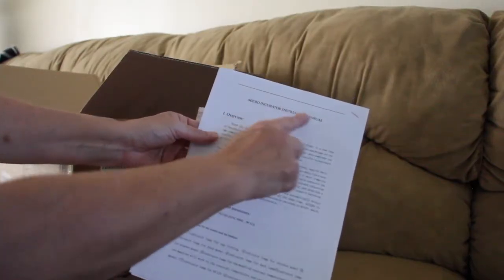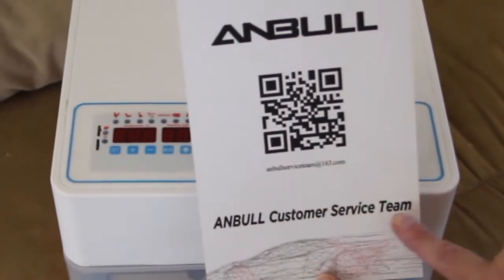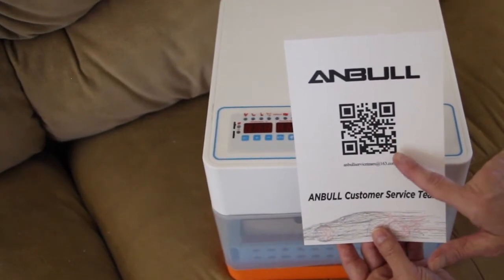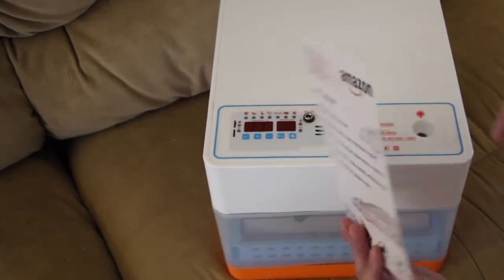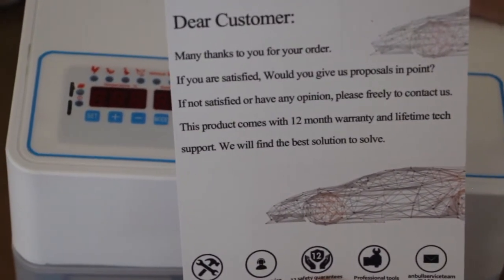So in the box you'll get this manual. You have the Anbel customer service team. Here's the QR code that you can scan on your phone. This product comes with a 12-month warranty and a lifetime tech support.